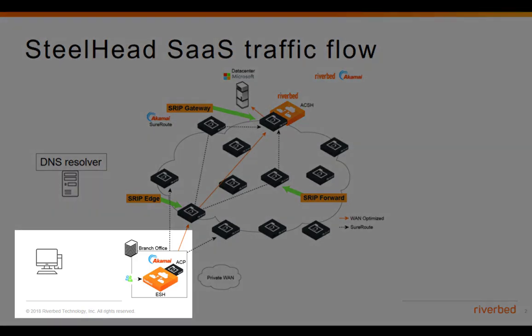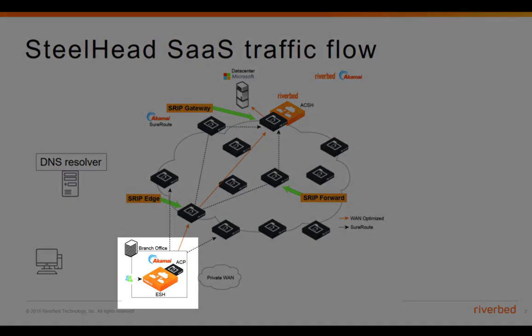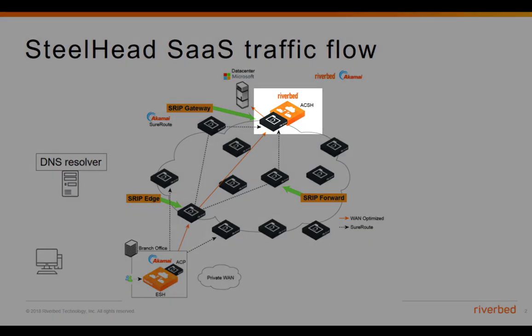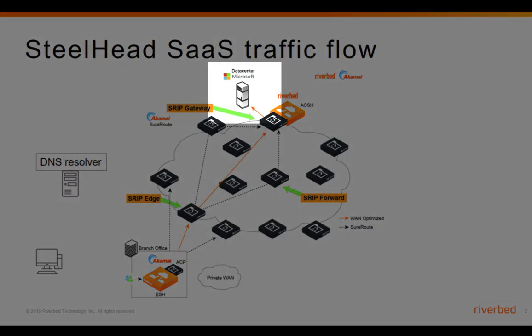We have the branch office where the end users are located, the enterprise Steelhead, and this is Akamai's network, which is our cloud partner. Inside Akamai, we have the Akamai Cloud Steelhead, which is a Steelhead virtual instance. Here we have the SaaS provider or the end server. In this example, we'll use Microsoft as a SaaS provider and Office 365 as the SaaS platform.